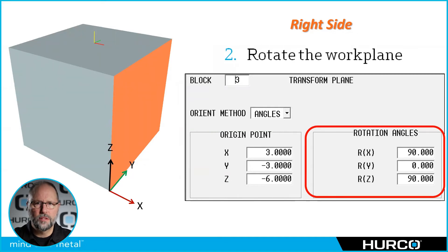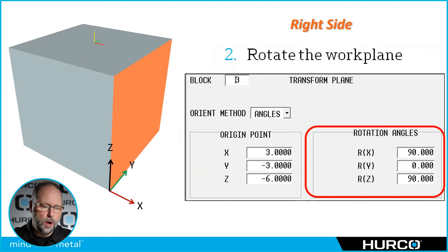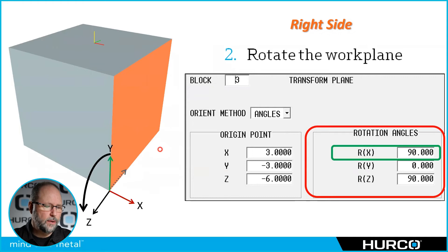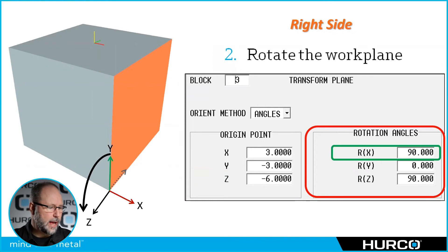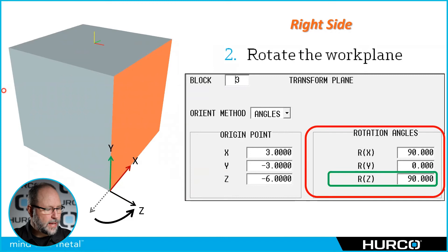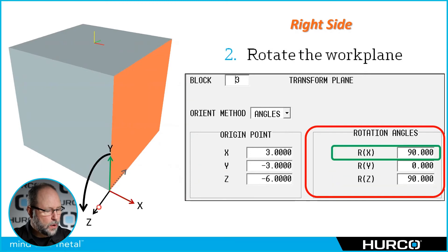Remember what we talked about in a previous video — these rotations happen in alphabetical order, so any rotations around x will happen before b or y and then before z. So if we look at our little Cartesian coordinate system here, we're going to rotate around x 90 degrees, just like what we've been doing throughout these videos, but now we're going to rotate around the z axis.